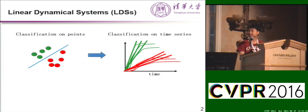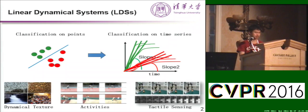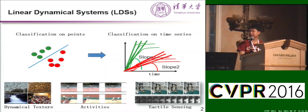The simplest curves are lines. So in this case, we can fit lines to the time series and then use, for example, k-means to group them. But in vision or robotics, the time series correspond to, for example, dynamical texture, activities, tactile sensing, and so on. They are usually high dimensional and have complicated data structure. So simply modeling by lines or curves is not rich enough for these data. So I am going to use linear dynamical systems.